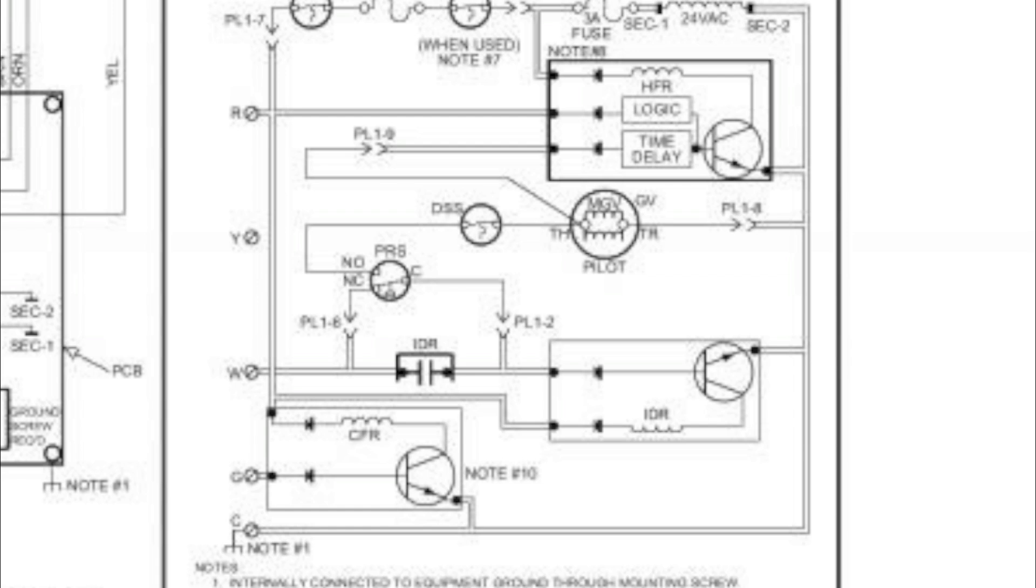So, the pressure switch changes its position. Power passes from, at this point, power passes from W through the closed IDR contacts up through C to normally open, which is now closed, over to a limit switch and the gas valve assembly. That's what says pilot on it there. And that's how that works. You may have to run this over a couple of times to make sure you understand it, but it is fairly simple if you just follow it through.